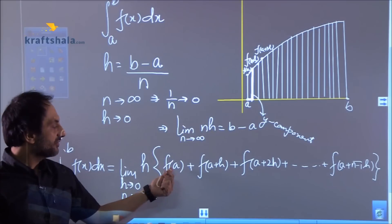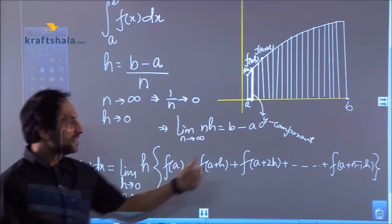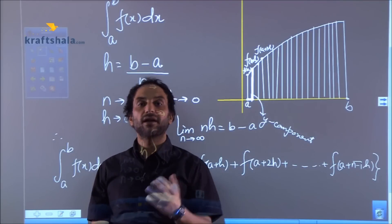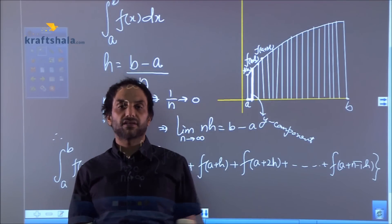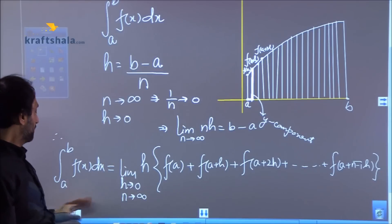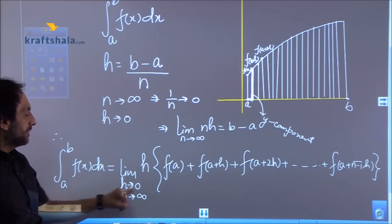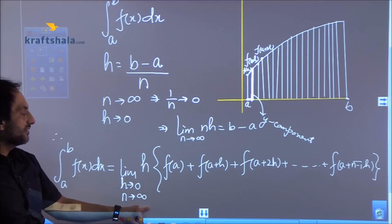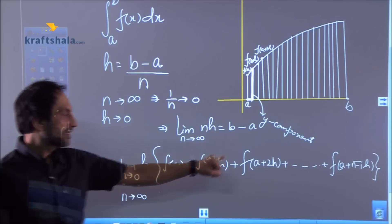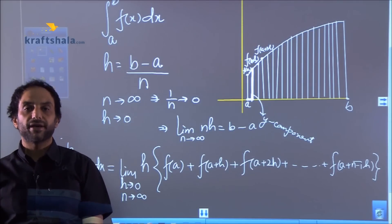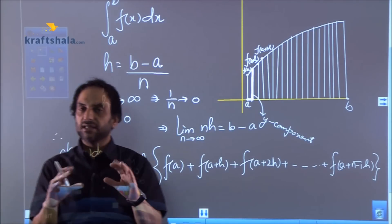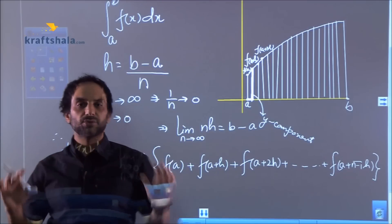You'll be surprised that last term is not n, this is n minus 1. The simple reason is we are starting from 0, a plus 0h, so obviously the last term will be n minus 1 into h. So there are n numbers of rectangles. So this is the formula: a to b f(x)dx, limit h goes to 0, n tends to infinity, h times f(a), a plus h, f(a+2h), and f(a+n-1h). So after understanding this formula, one can easily do the questions.